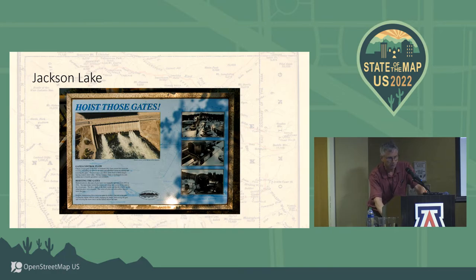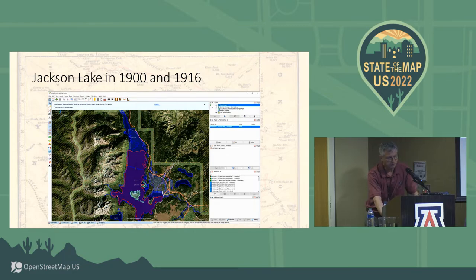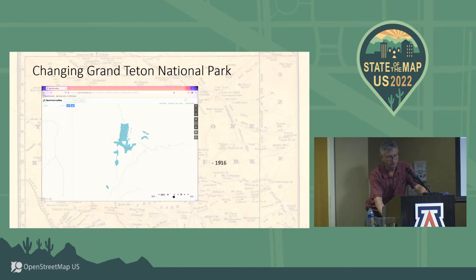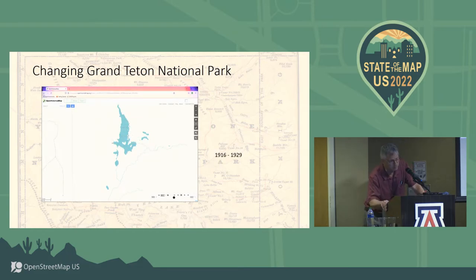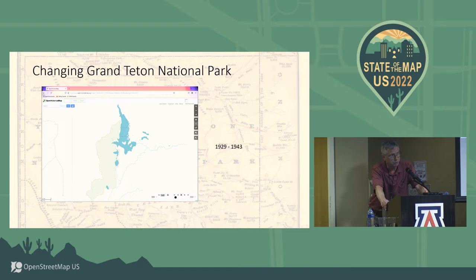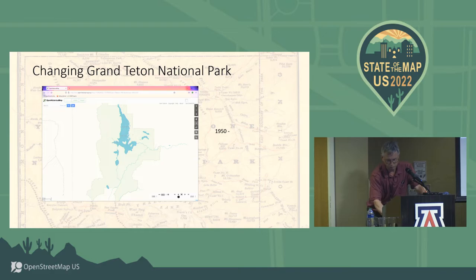Grand Teton National Park is also home to Jackson Lake. It was a natural lake but was enlarged — I've traced the original lake in red using JOSM based on the 1900 topo map, and the enlarged lake extends to the north. In this animated map you can see the lake getting larger after the dam was built. The national park came along in 1929, and in 1943 Jackson Hole National Monument was added to the east; the two were combined in 1950.